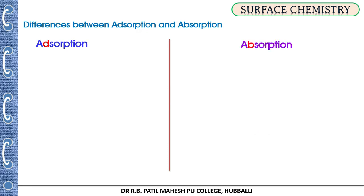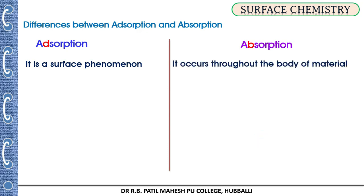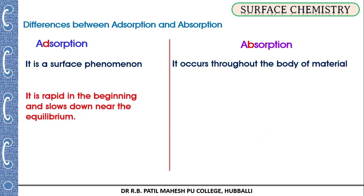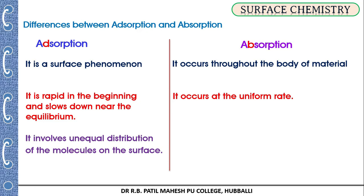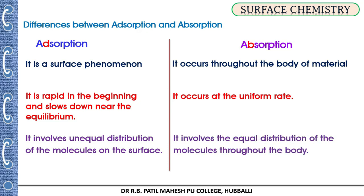The differences between adsorption and absorption: adsorption takes place on the surface — it is a surface phenomenon. Absorption involves molecules distributed throughout the body uniformly — it is a bulk phenomenon. Adsorption is rapid in the beginning and slows down once equilibrium is reached, whereas absorption occurs uniformly. Adsorption involves unequal distribution of molecules on the surface, while absorption involves equal distribution throughout the body.